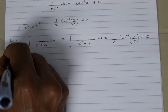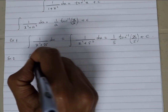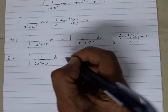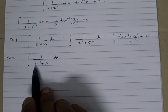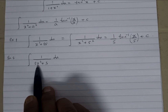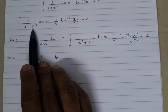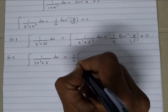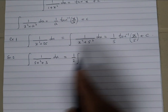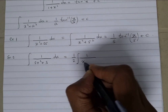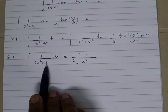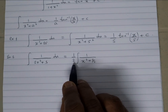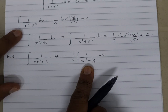Example 2: integrate 1 over 2x squared plus 3 dx. The problem with this question is there's a 2 here, and we have to leave x squared alone without any coefficient, like in the formula 1 over x squared plus a squared. So I'm going to remove the 2 and put it outside the integral sign, because it's a constant. Inside, I'm left with 1 over x squared plus 3 over 2, since 3 over 2 times 2 gives back 3. This is now looking much more like the standard form.